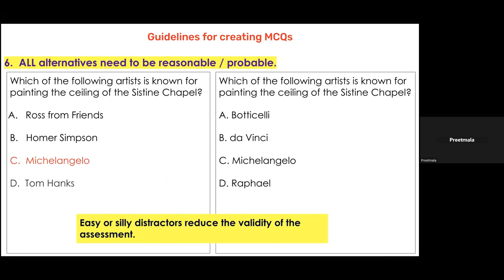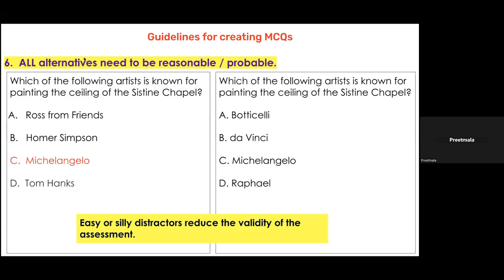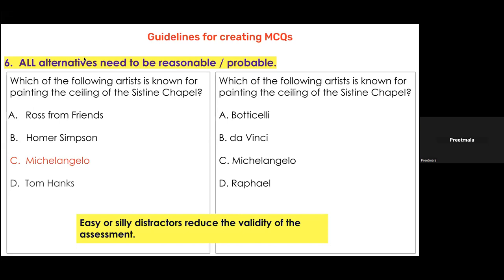That's a great point. If you've made questions about a specific person — say Michelangelo is the key — and the other characters are nowhere in the text, then a child who hasn't heard these names will find the other options silly. Unless you've covered these names and they are closely associated with the content, this creates the same problem as the left-hand box.